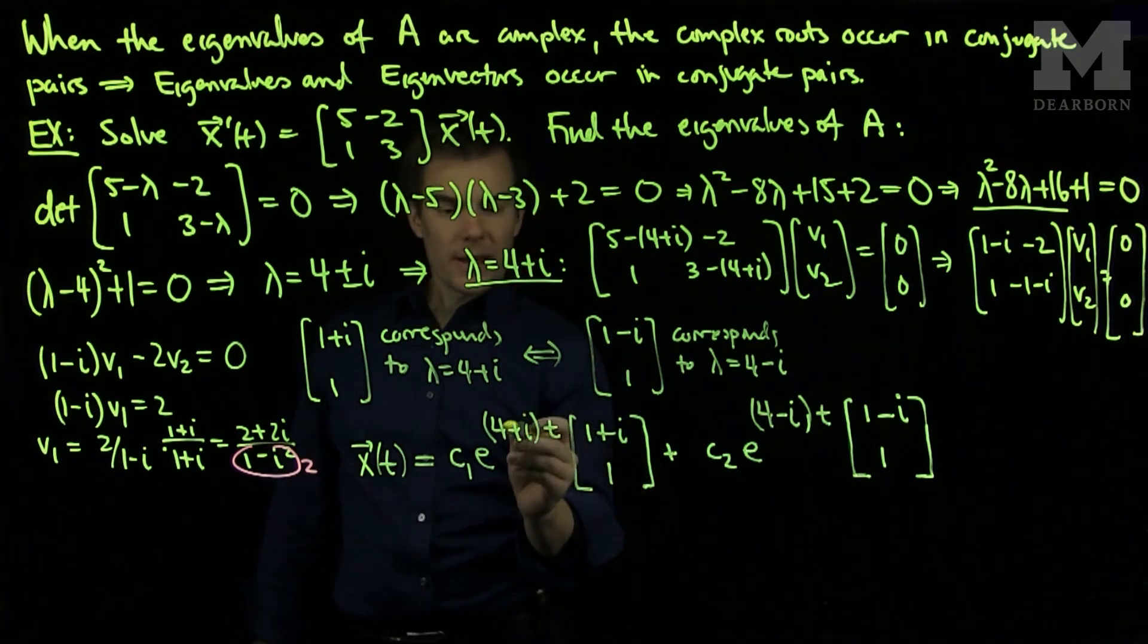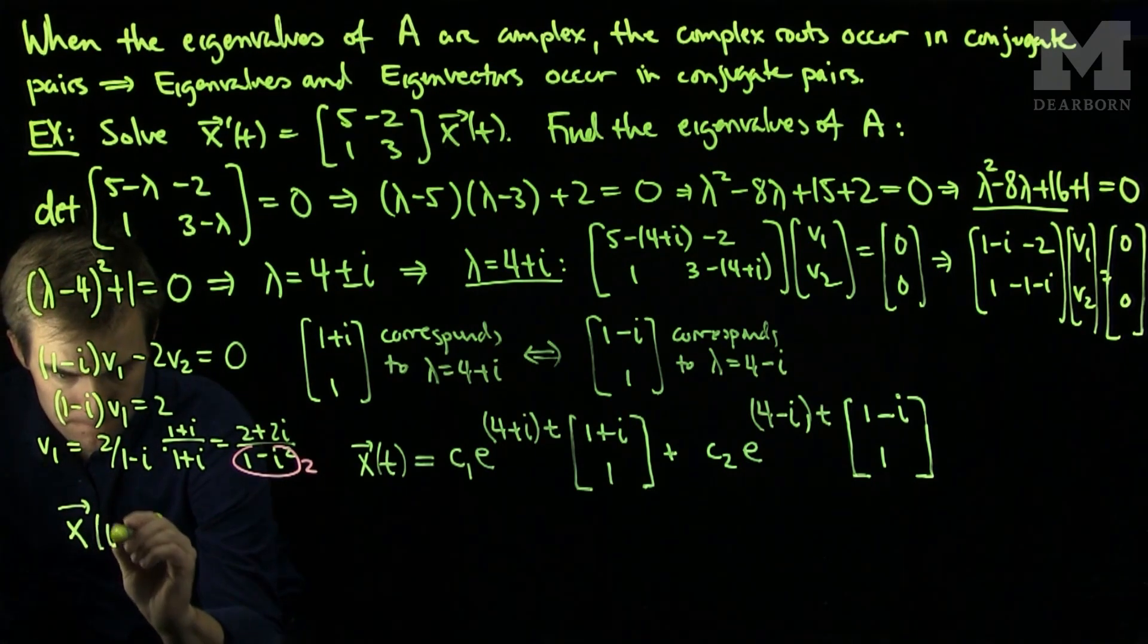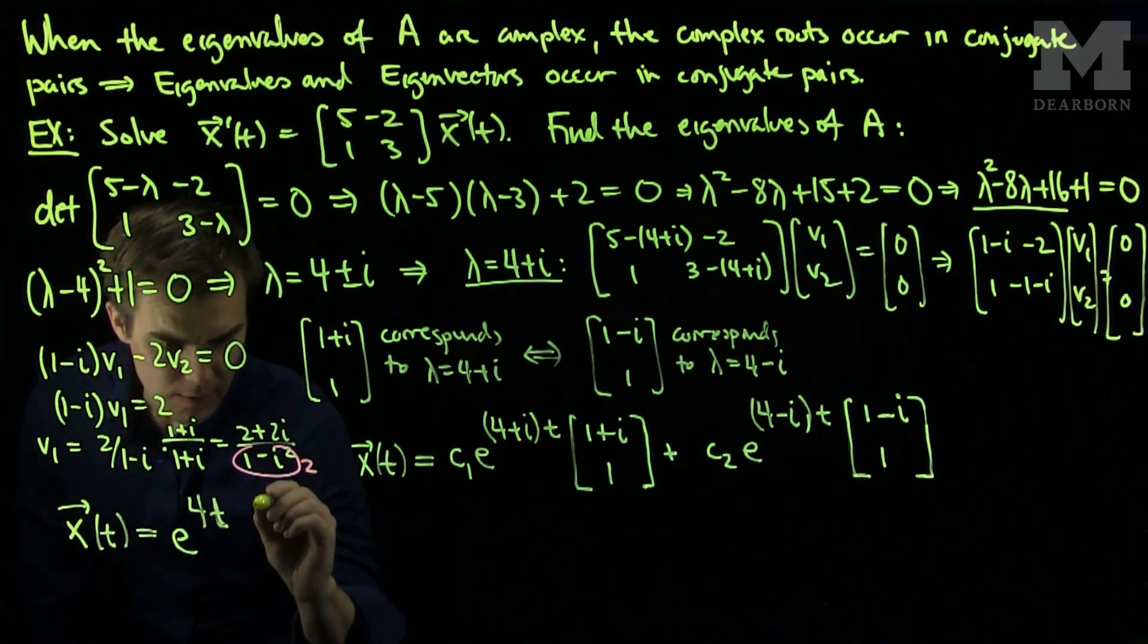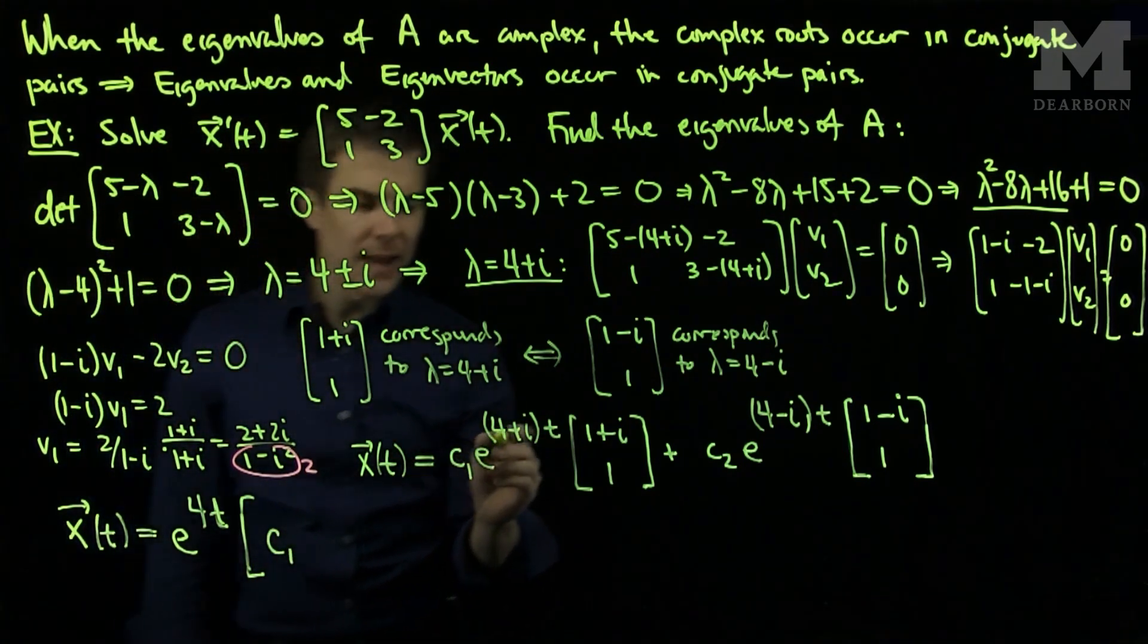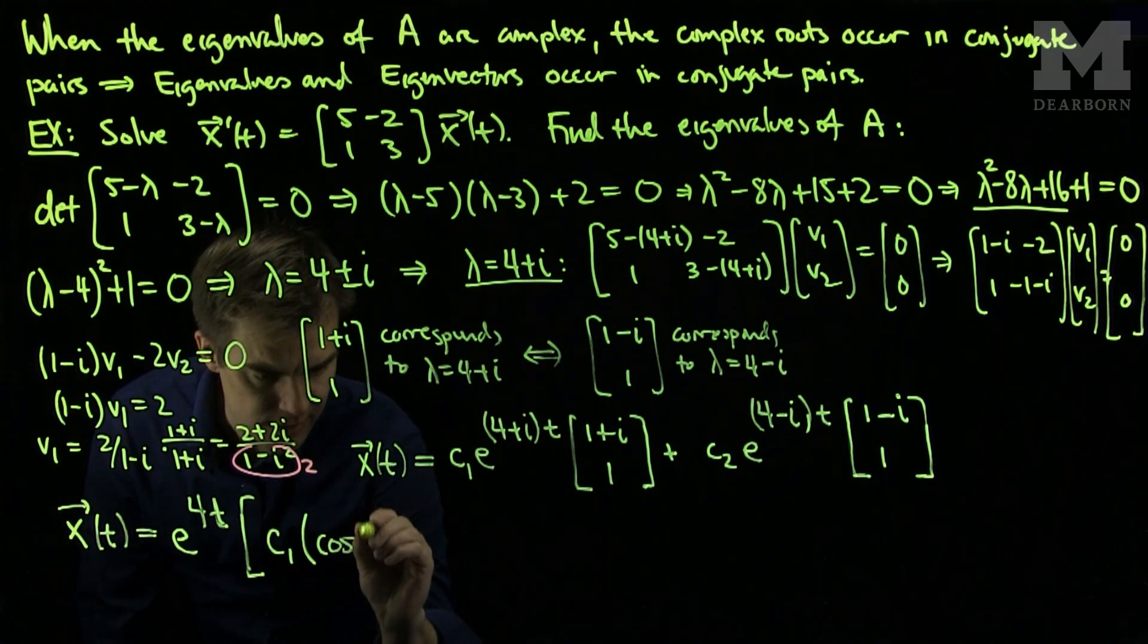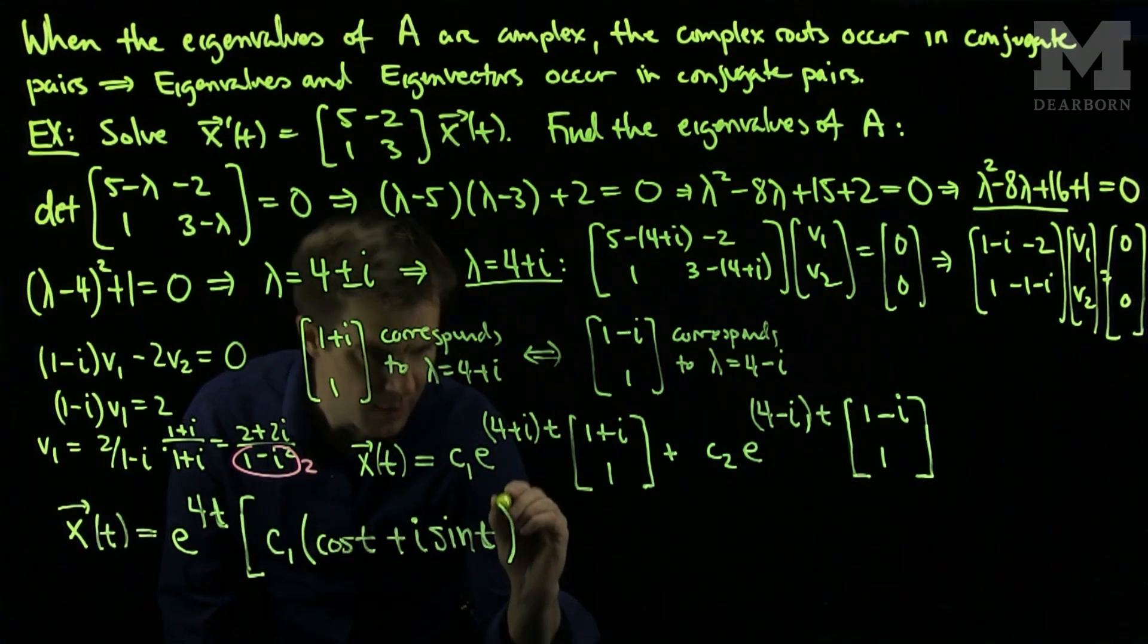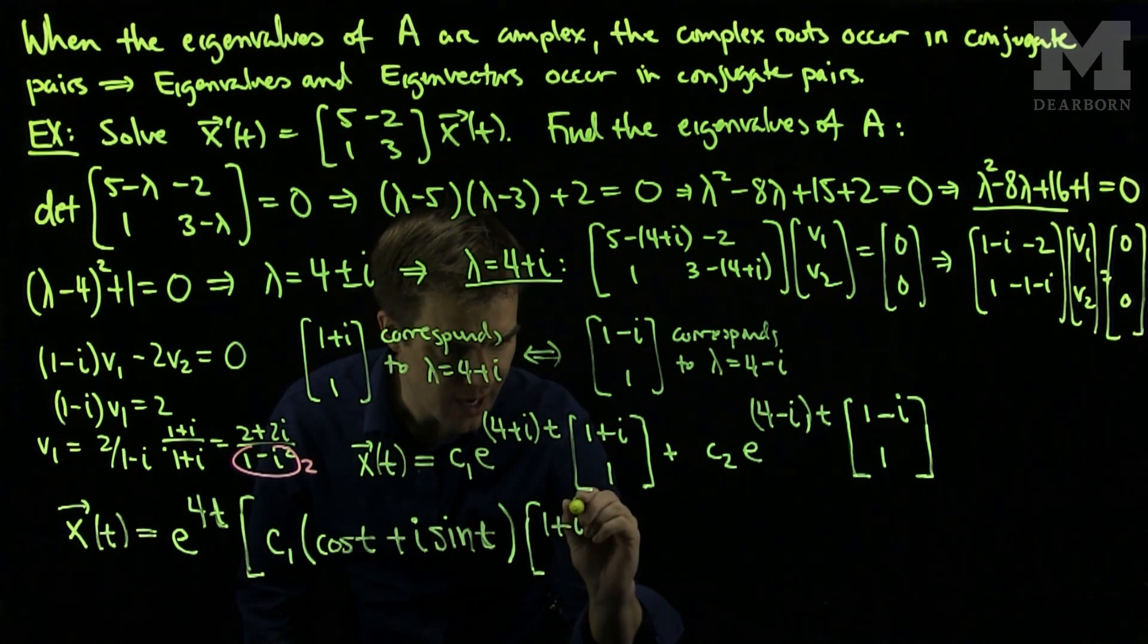I can pull out a common factor of e^{4t} from both expressions, so x(t) = e^{4t} times [c₁(e^{it})[1+i; 1]]. Now I apply Euler's formula: e^{it} = cos(t) + i·sin(t), in the direction of eigenvector [1+i; 1].